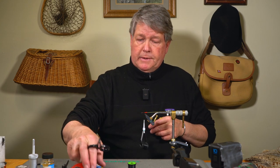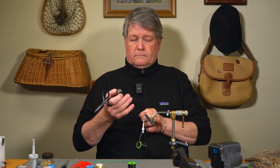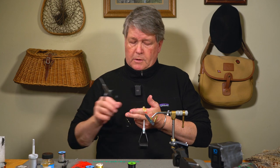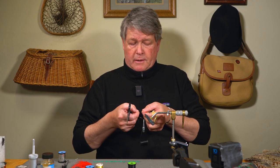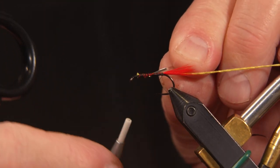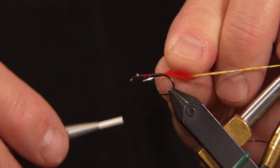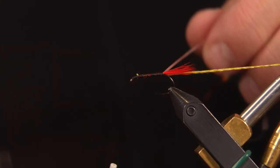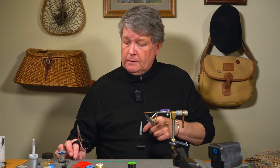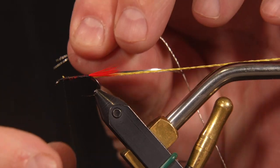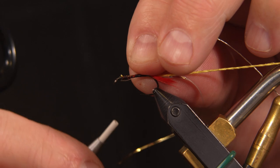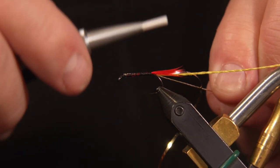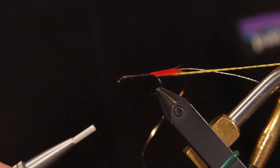So the next step I'm going to do is take my mylar. Trim a little piece of that off. This happens to be gold on one side, silver on the other. I want to have the silver side on the outside. So I kind of tie it in so the gold is facing me when I tie it. Wrap forward, lock that into my little material clip. Even up the ribbing material, tie that in. Wrapping back to the back of the hook again. Making sure that everything's tied in evenly.